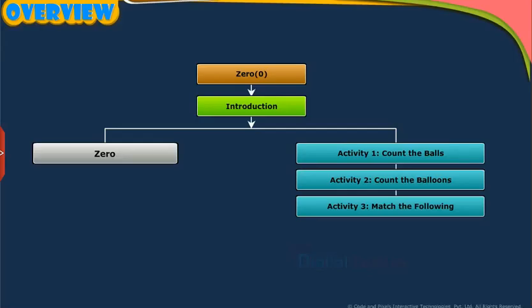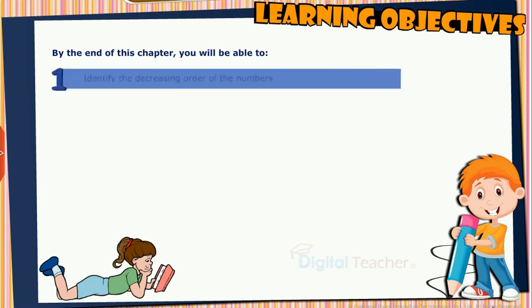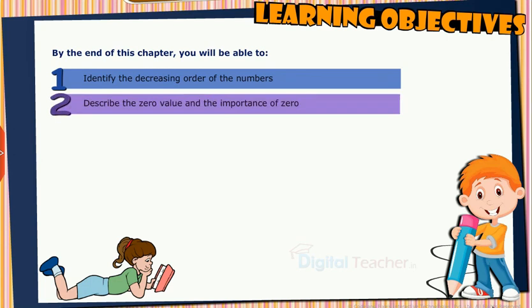This slide presents the overview of the chapter. Learning objectives: by the end of this chapter, you will be able to identify the decreasing order of numbers, and describe the zero value and the importance of zero.